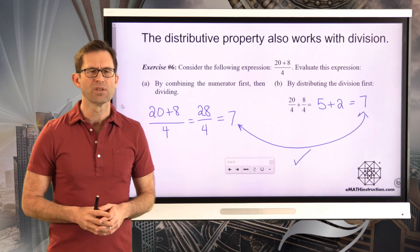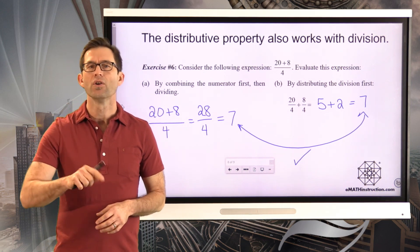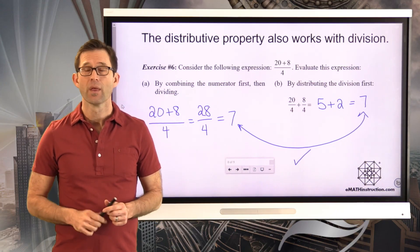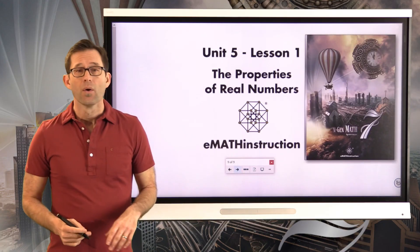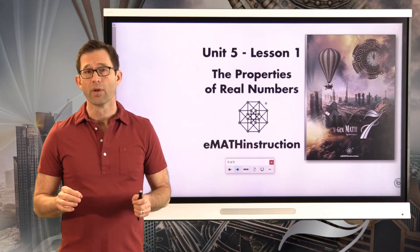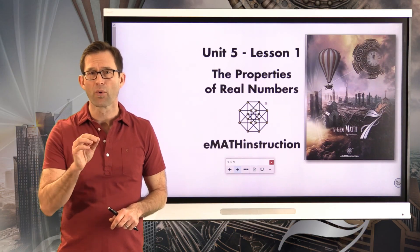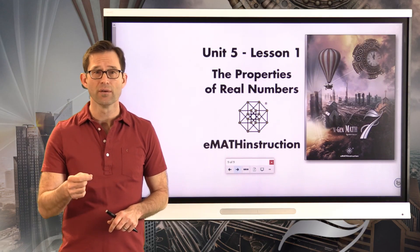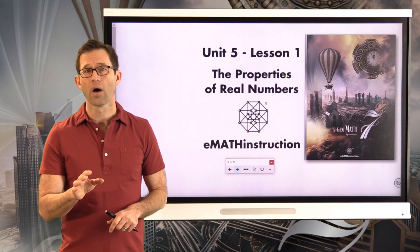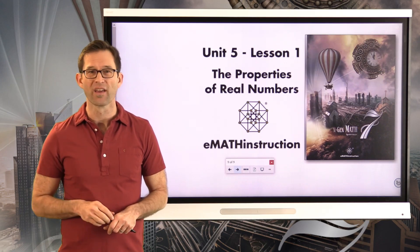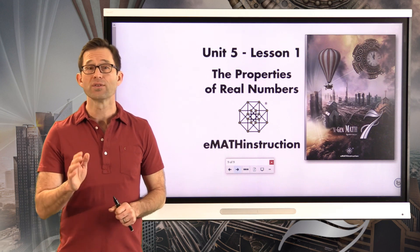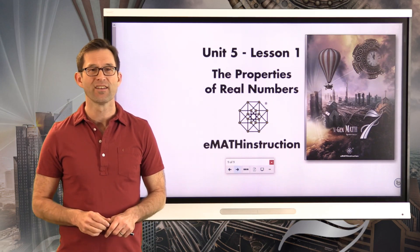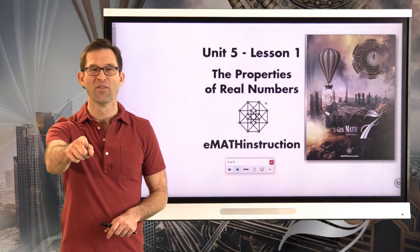We work a lot with the distributive property using multiplication, but it's more rare that we see it with division — it still works though. Today we saw some major properties of the real numbers, specifically the operations within them. Addition and multiplication are both associative and commutative. Subtraction and division are not. And we saw the all-important distributive property, which we'll get a lot of work with in future lessons. Thank you for joining me for another NGen Math 7 lesson by eMath Instruction. My name is Kirk Weiler — until next time, keep thinking and keep solving problems.